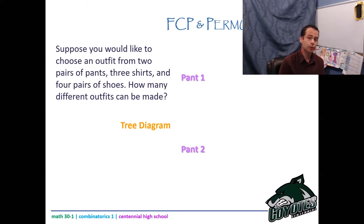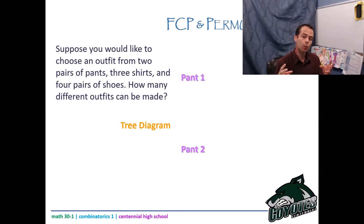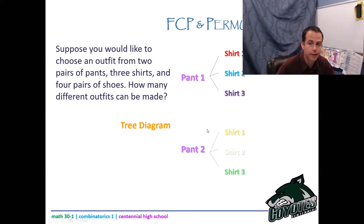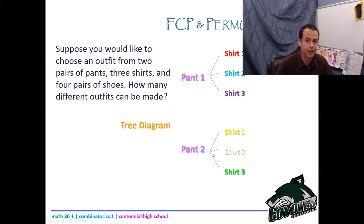I go and look at the shirts — I have three shirts, so three options for shirts. I could choose those three shirt options with pant one, or those three shirt options with pant two. Both pant one and pant two branch off to show the shirt options — that's why we call it a tree diagram, because there are a bunch of branches. Now I can see I actually have six different outfits: pant one with shirt one, pant one with shirt two, pant one with shirt three, pant two with shirt one, pant two with shirt two, or pant two with shirt three.